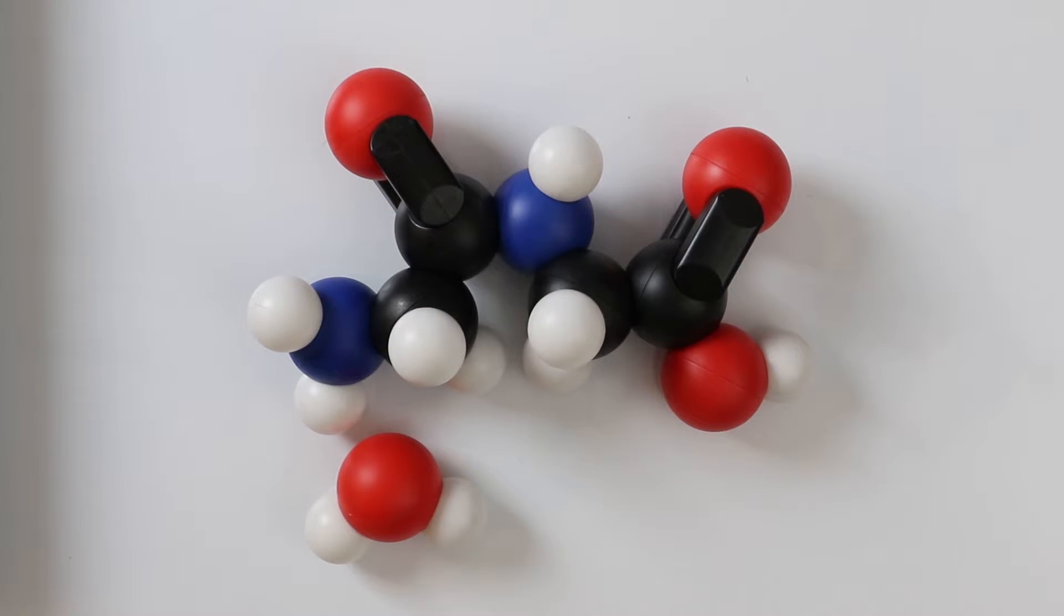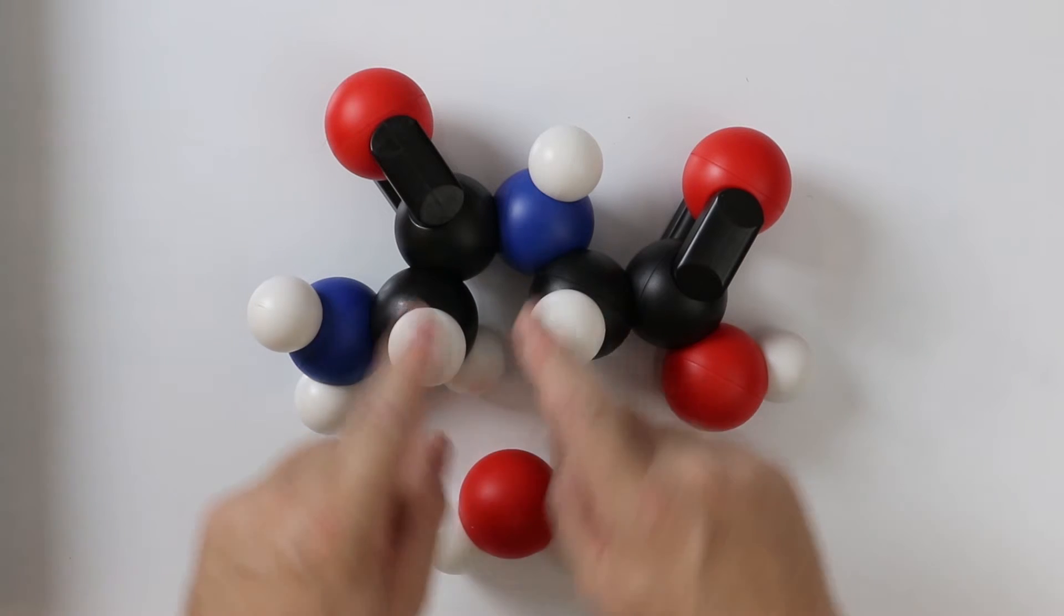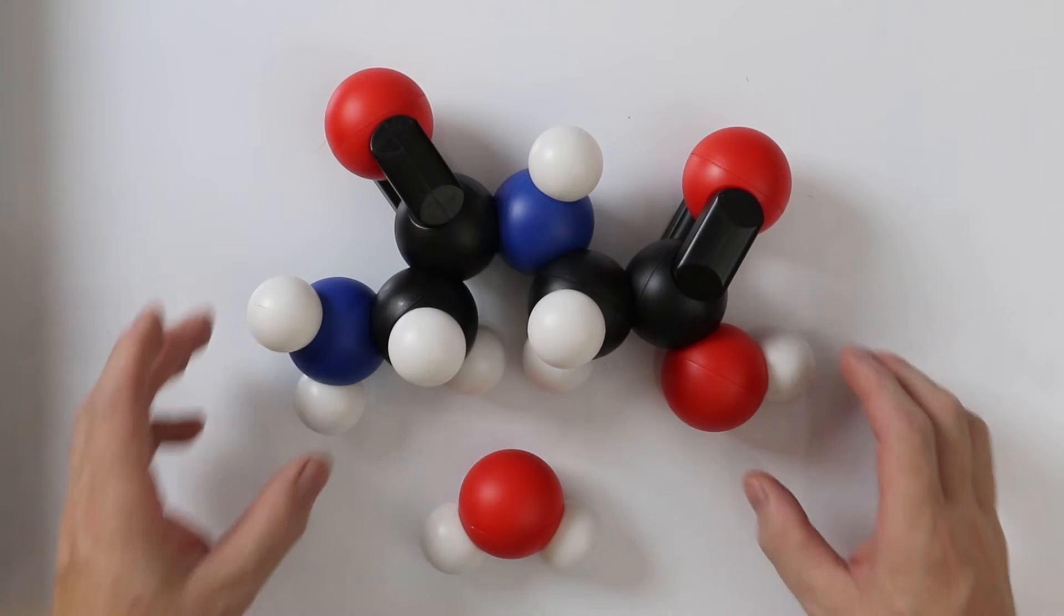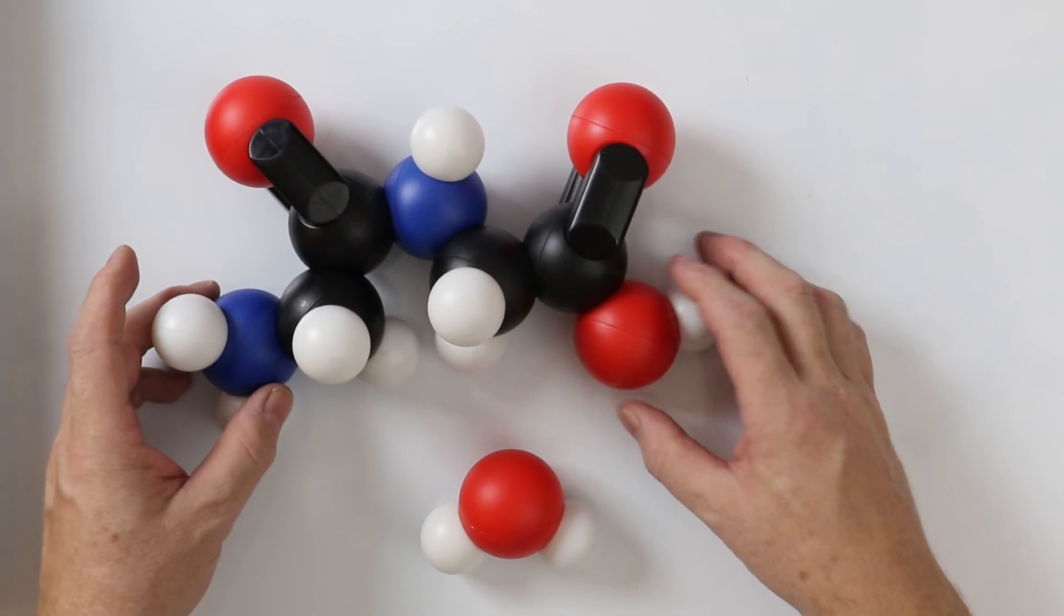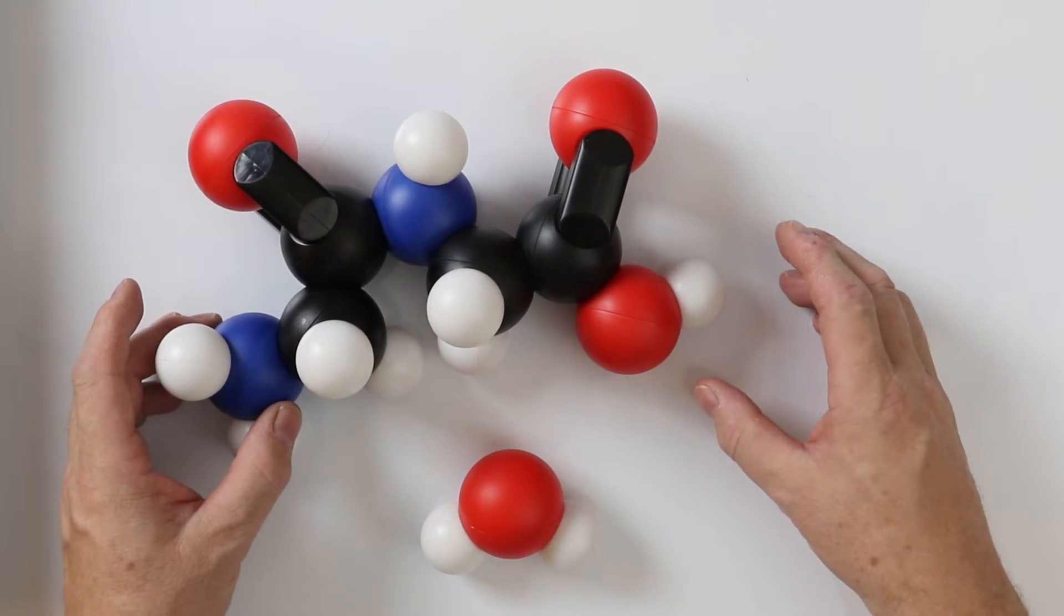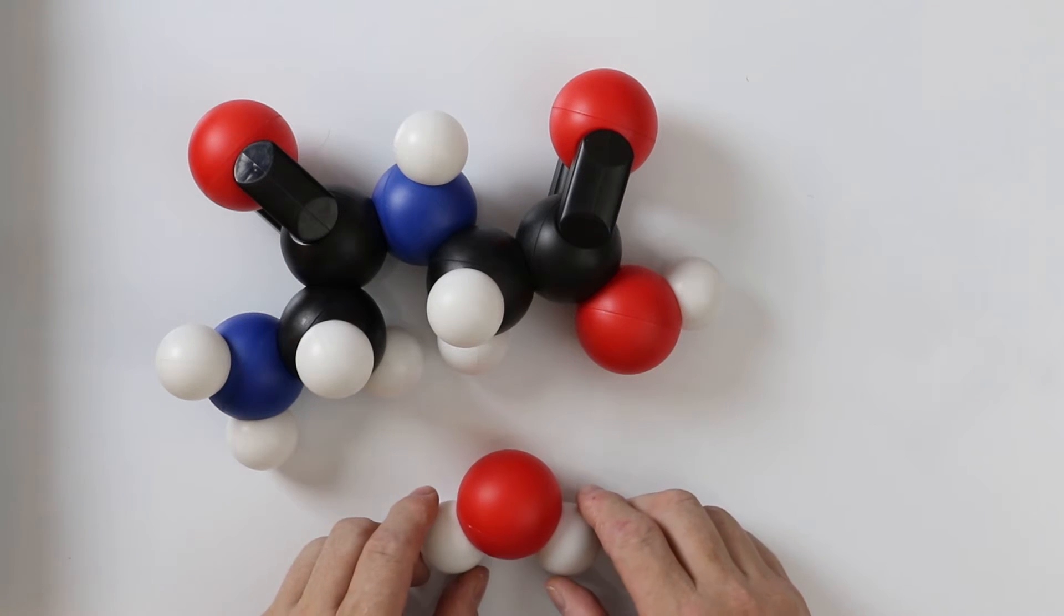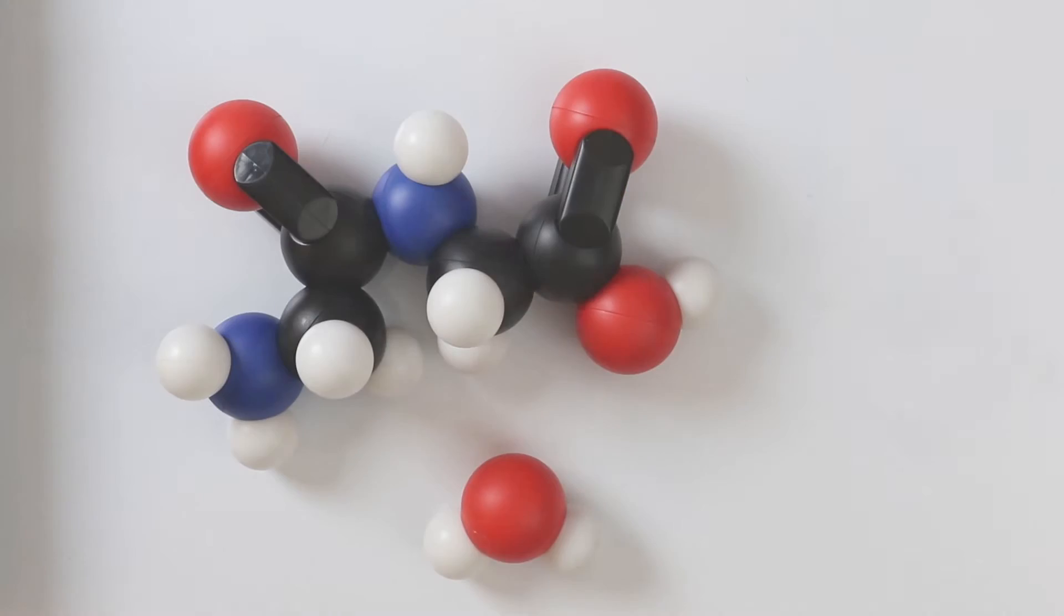A peptide bond forms, producing a dipeptide. At a later stage, more amino acids can be added, forming polypeptides and eventually proteins.